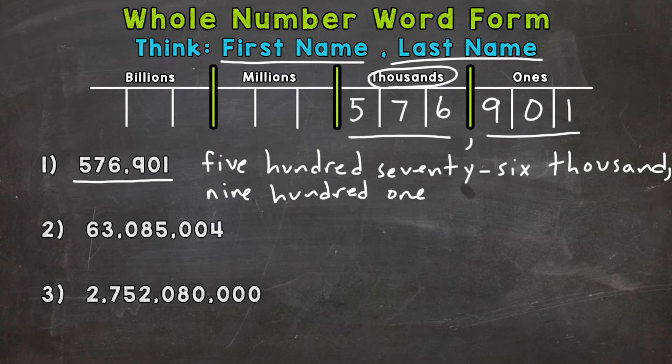So we would read number one in full as five hundred seventy-six thousand, nine hundred one. Just remember, go period by period, thinking first name, last name.